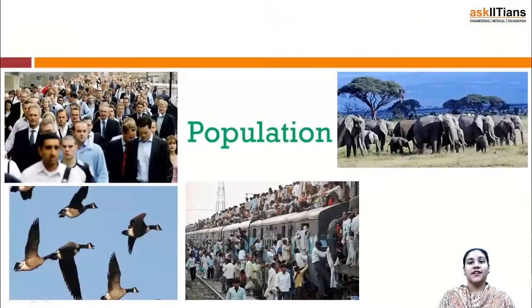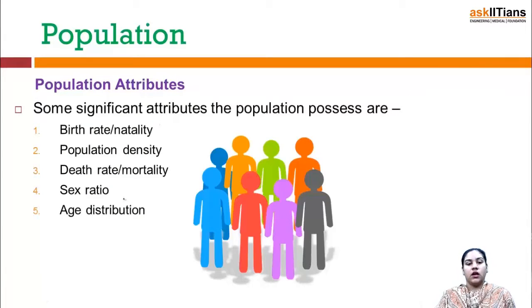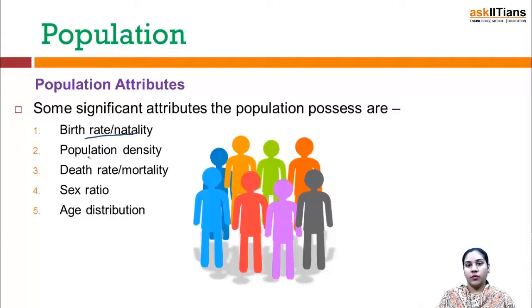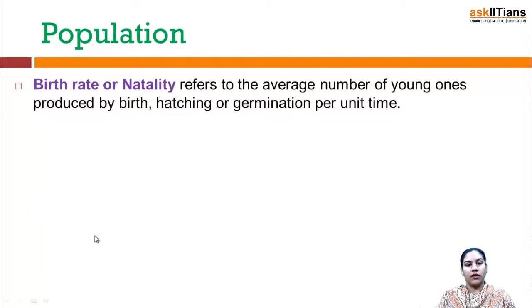Hello students, welcome back. In this part we will start our discussion with population. We will discuss the population attributes, which include birth rate (also known as natality), death rate (also known as mortality), population density, sex ratio, and age distribution. These are the major characteristics which affect the population group.